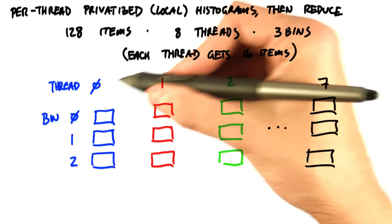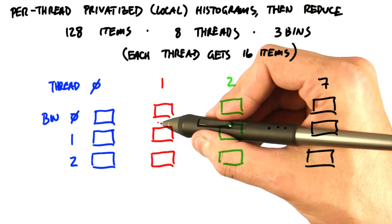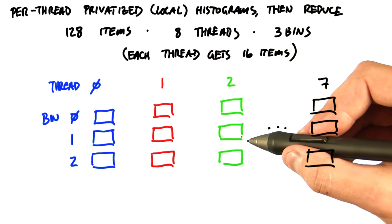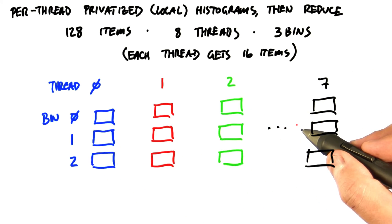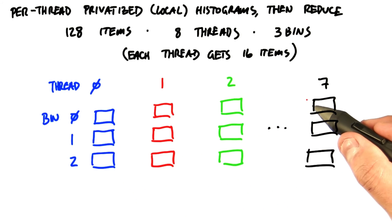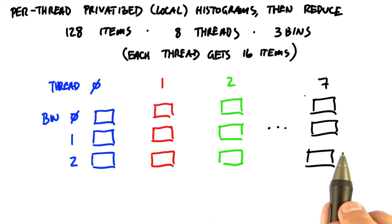We have 16 items per thread, and each thread can independently accumulate its own local histogram in its own registers. So we get 8 separate local histograms, each of which has accumulated 16 items, which isn't particularly useful. What we actually need is 1 global histogram rather than 8 local histograms.